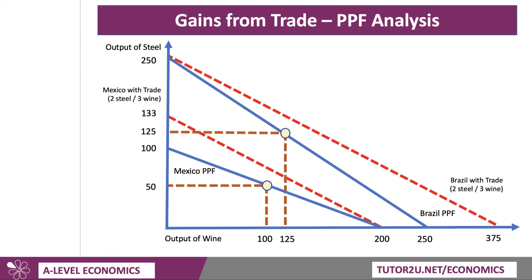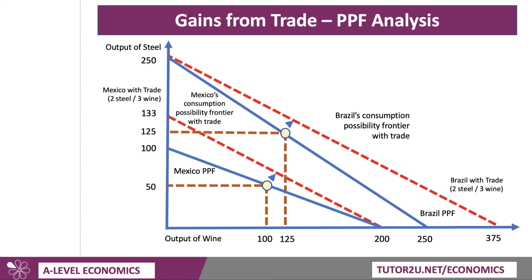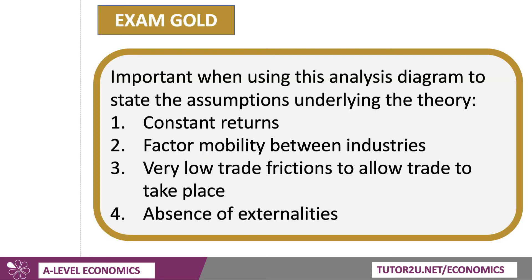The red dotted line has the same gradient for both countries because that represents the mutually beneficial terms of trade. Both countries can move to a higher level of consumption of both products if they trade at two steel for three wine. There has been an outward shift in the consumption possibility frontiers — that is how you show the potential gains from trade.